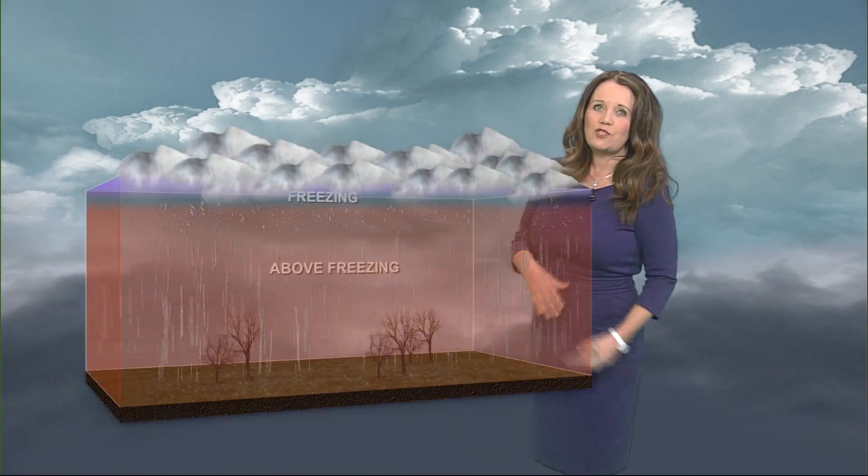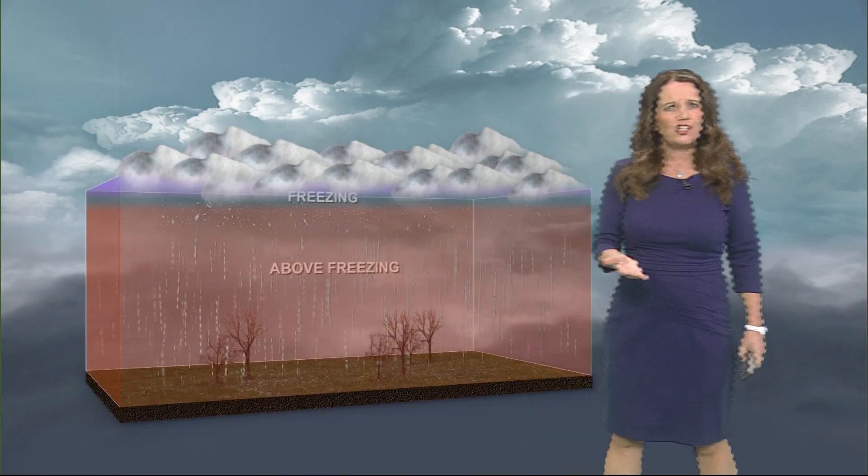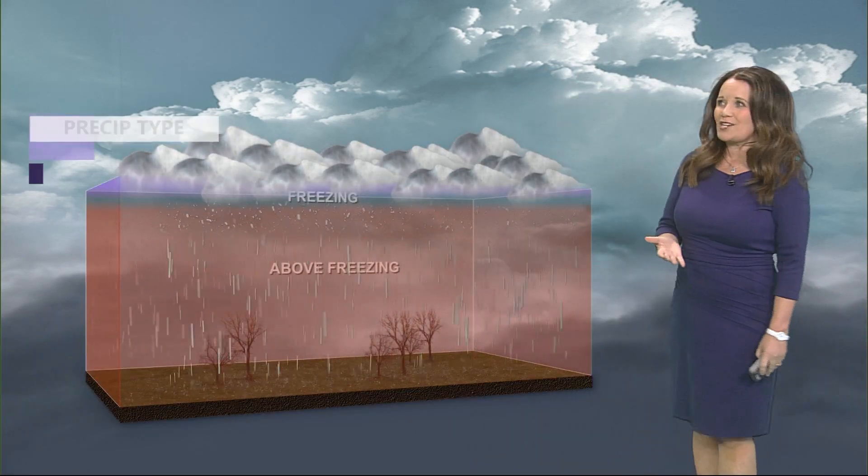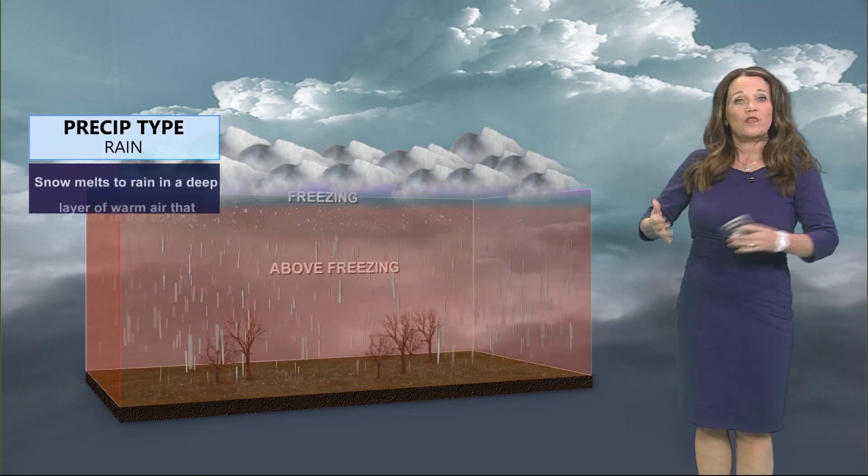There are many types of winter precipitation including snow, sleet, freezing rain, and rain. That's when we have a lot of different columns of air in the atmosphere that can change up that precipitation type.